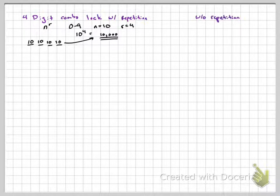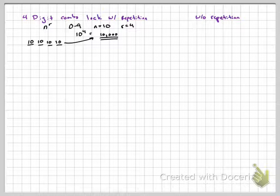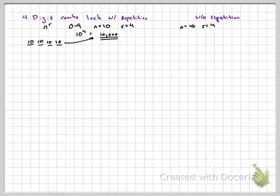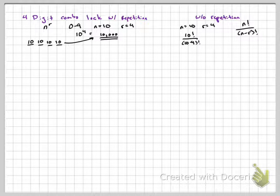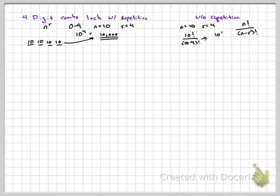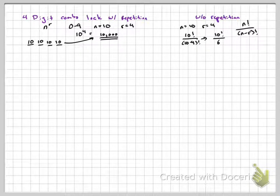Let's elaborate this on a little bit. Without repetition. Same idea. Alright. But now, repetition is not allowed. So my n is still 10. My r is still 4. n factorial over n minus r factorial. 10 factorial over 10 minus 4 factorial becomes 10 factorial over 6 factorial.